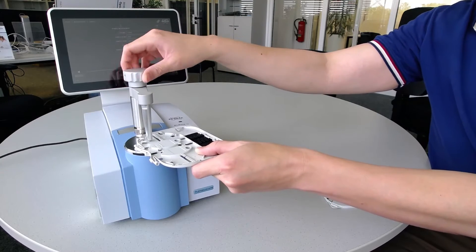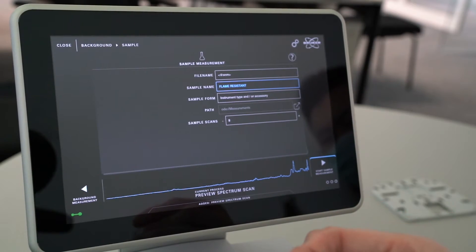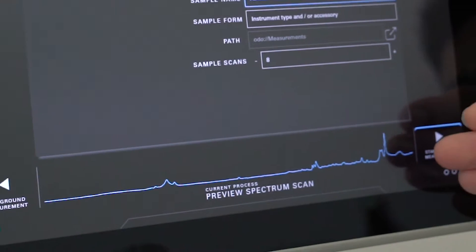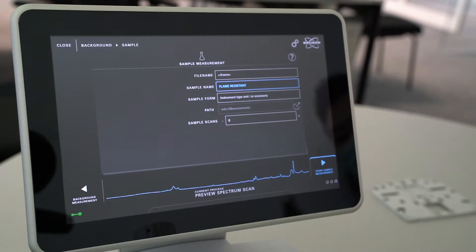We can make sure the sample is properly placed by looking at the preview measurement. Once everything looks good, the IR analysis can be started.